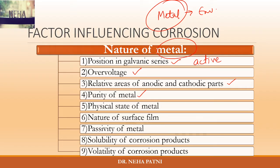Purity of metal is also a factor. In wet corrosion, heterogeneity matters a lot. If the metal is not pure and is heterogeneous, there is generation of anodic and cathodic areas because of that heterogeneity, and then there is generation of an electrochemical cell. So the metal has to be pure; if it is impure there are chances of electrochemical corrosion.